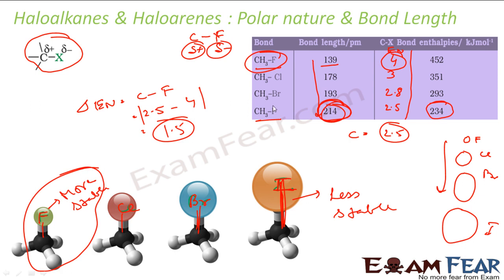So, this is very polar. If you talk about C-I bond, it is 2.5 minus 2.5, almost 0. If you talk about C-Br bond, then it is 2.5 minus 2.8 is 0.3. If you talk about C-Cl, it is 3 minus 2.5, it is 0.5.